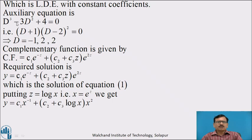Factors of this cubic polynomial are (D plus 1)(D minus 2) squared equal to 0. That is, we get the roots as D equal to minus 1, 2, and 2. Here, one root is real and distinct, and the remaining two roots are real and repeated.